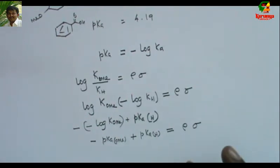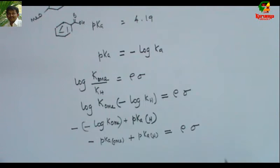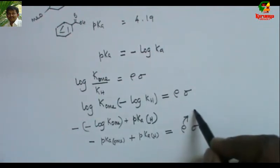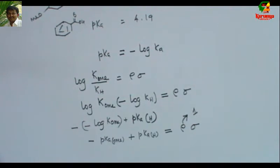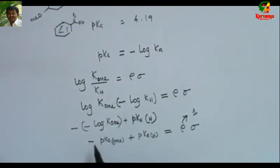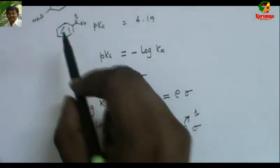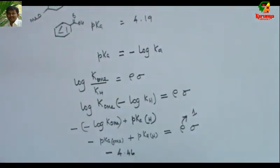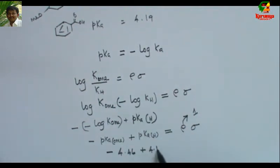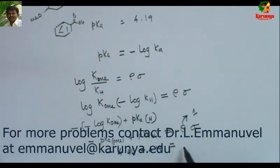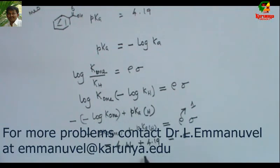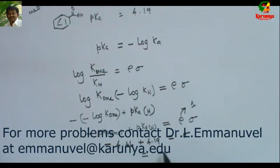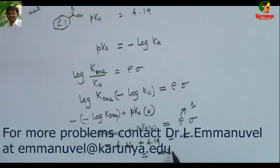For the dissociation of benzoic acid, the reaction constant rho is equal to 1. So substituting: minus pKa(OMe) which is 4.46, plus pKa of benzoic acid which is 4.19, with rho equal to 1, gives sigma. Calculating: minus 4.46 plus 4.19 = sigma, so sigma equals minus 0.27.